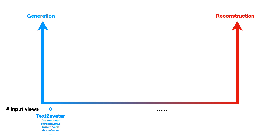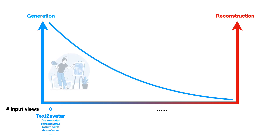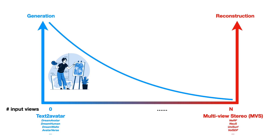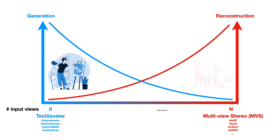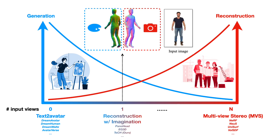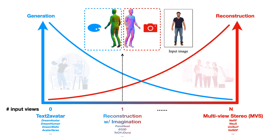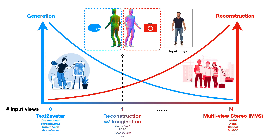This process resembles an artist using text as guidance to express their creativity. When densely captured views are available, the 3D avatar can be reconstructed via multi-view stereo. The reconstructor then works like an architect with accurate blueprints. For few-shot or one-shot observations, why not allow the artist and architect to collaborate?